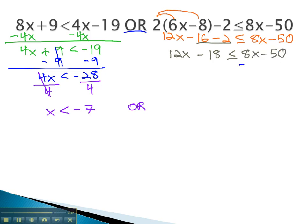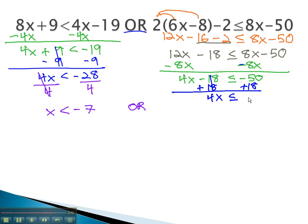Move the variable to the same side by subtracting 8x, gives us 4x minus 18 is less than or equal to negative 50. Adding 18 gives us 4x is less than or equal to negative 32. And dividing both sides by 4, we find x is less than or equal to negative 8.